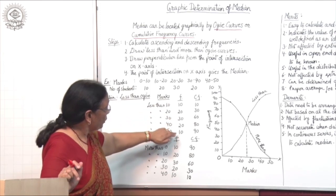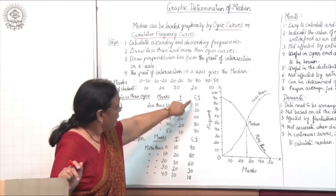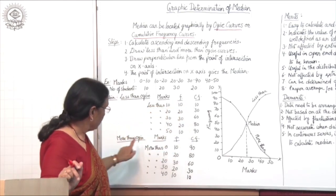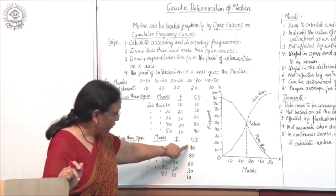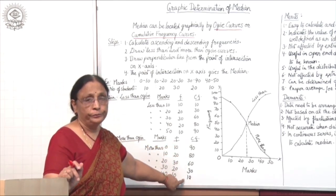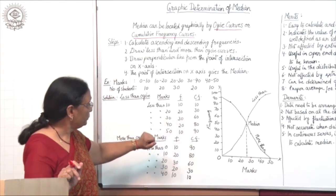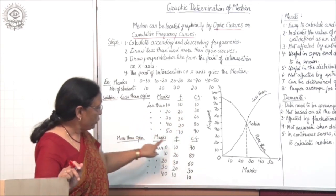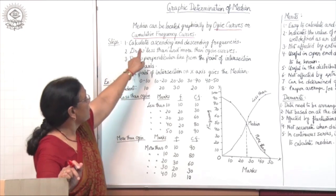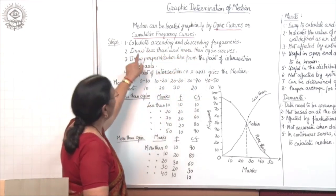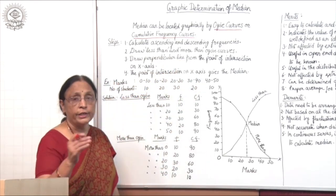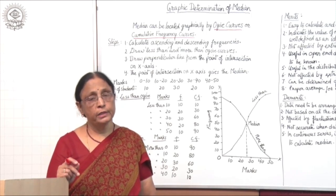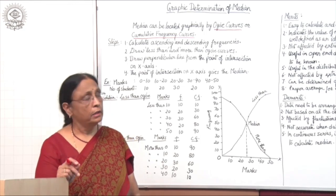First you will arrange the given frequencies. For the less than ojive, you will make the cumulative frequency in ascending order. For the more than ojive, arrange the cumulative frequency in descending order. So less than ojive uses ascending order cumulative frequencies, and more than ojive uses descending order cumulative frequencies. After arranging the frequencies, you draw two curves: one less than ojive and one more than ojive.